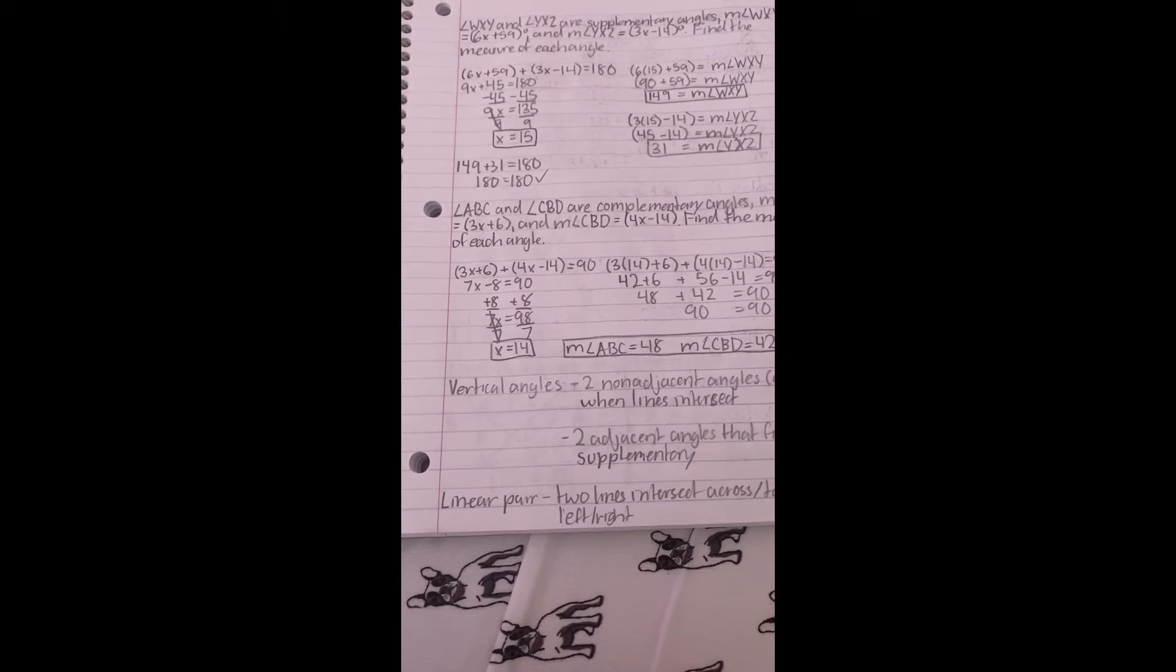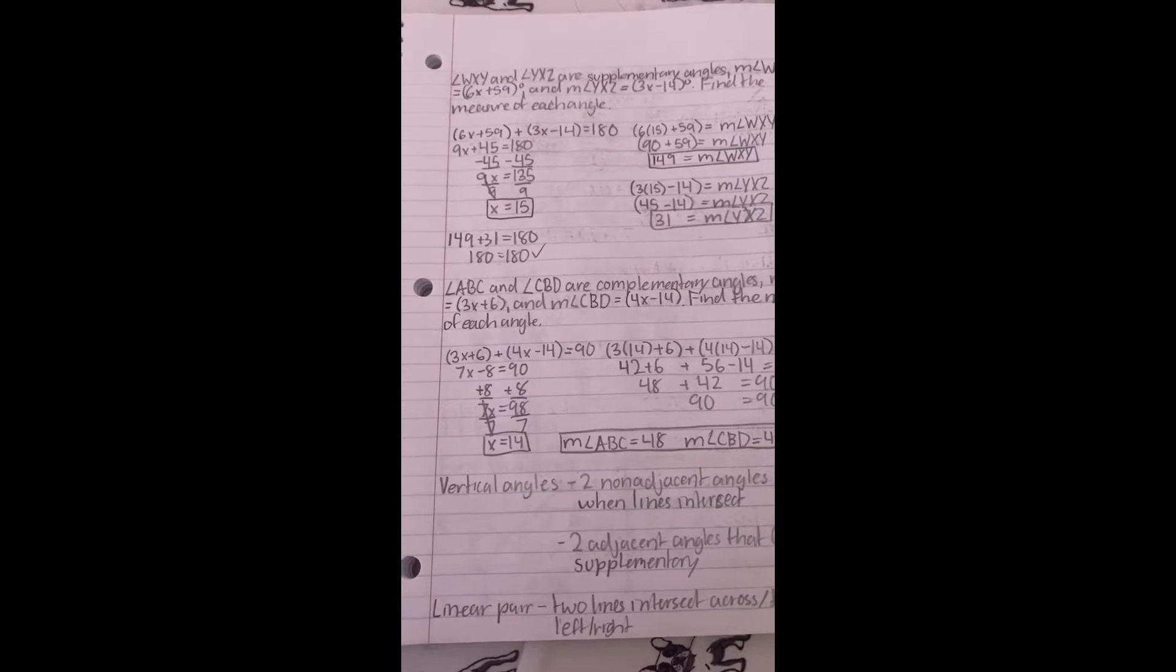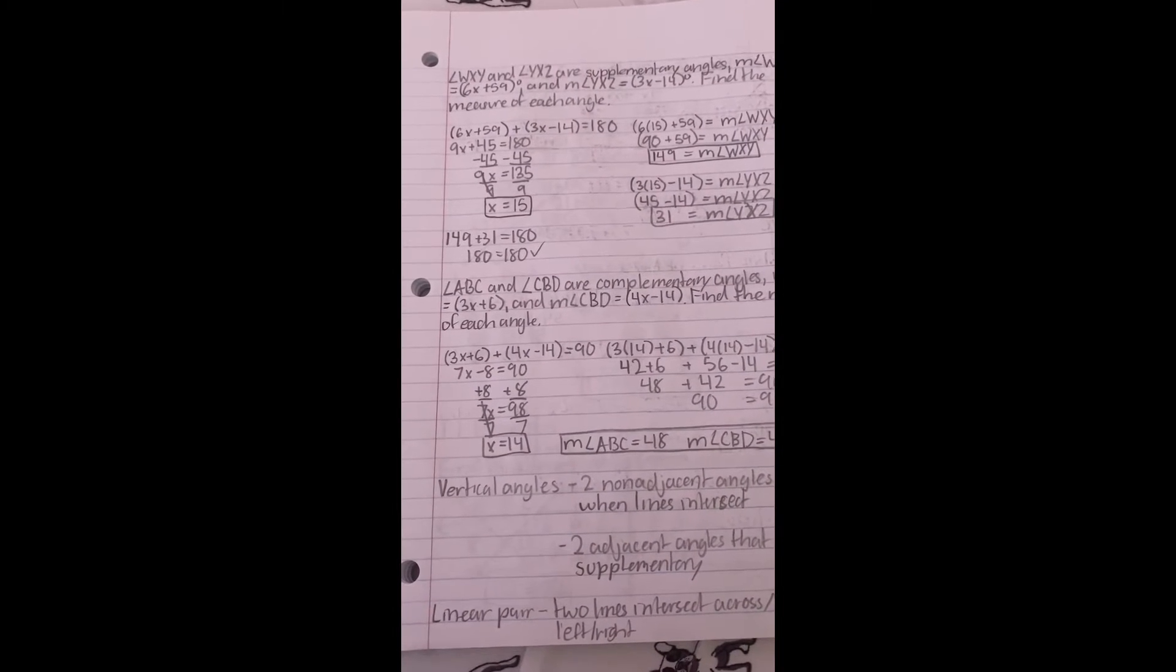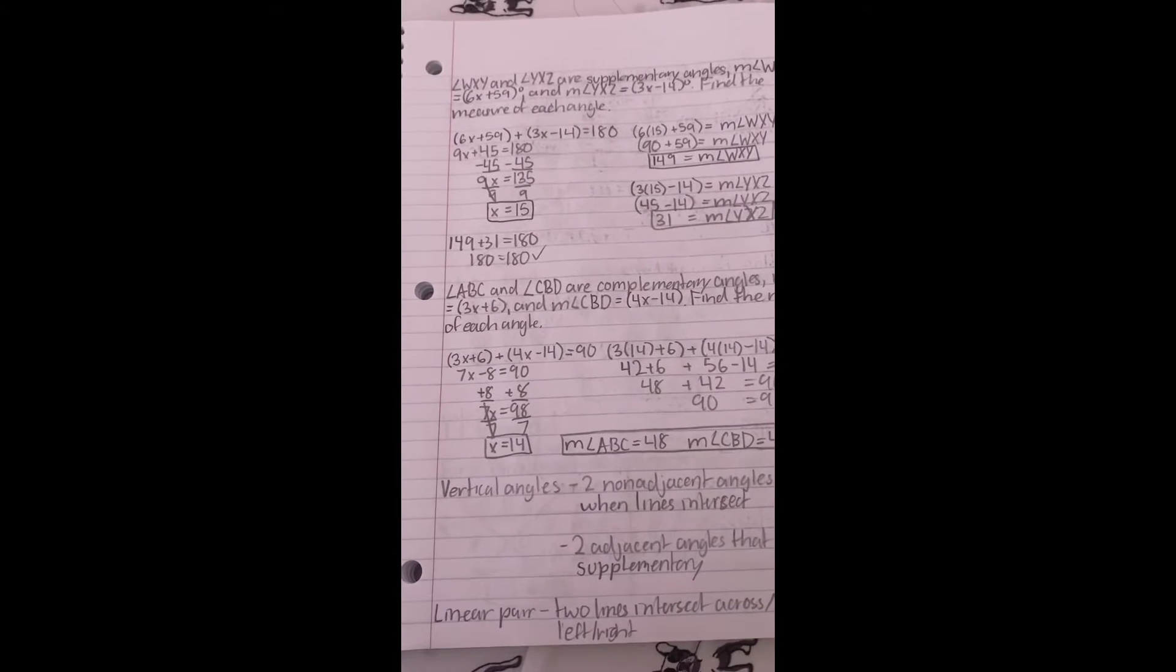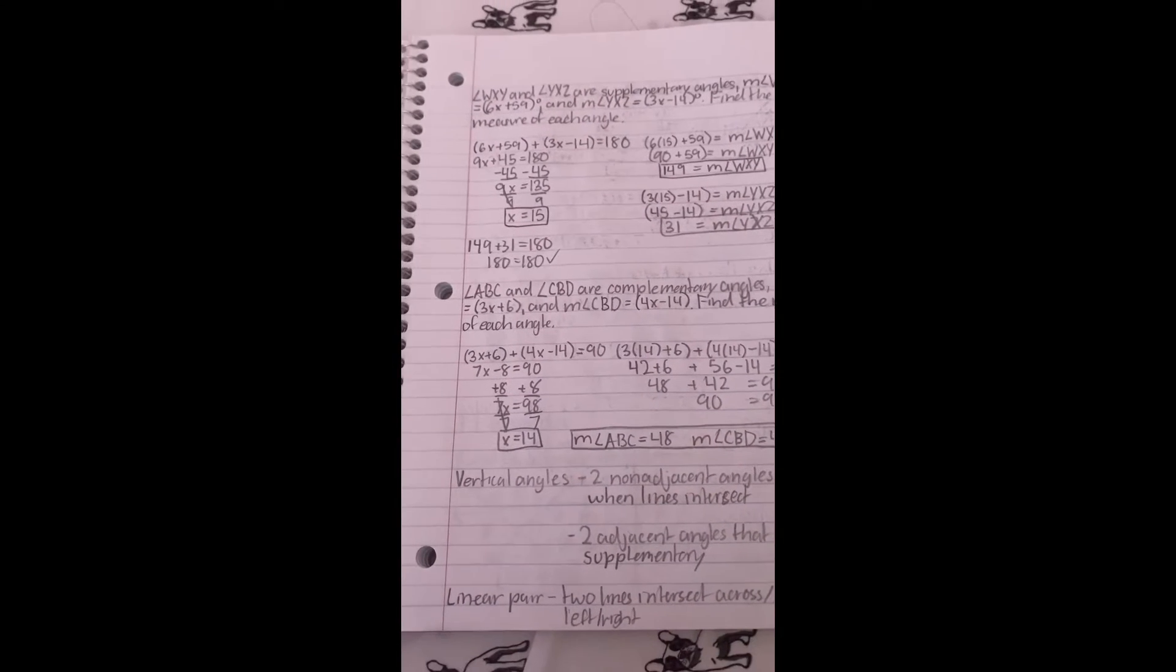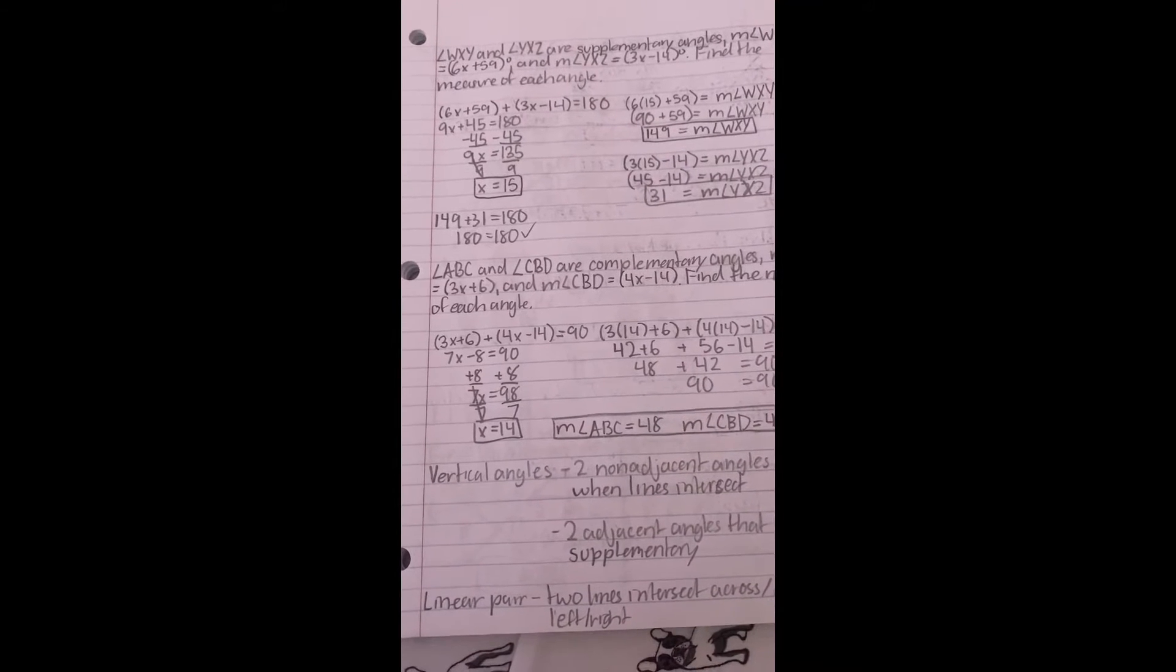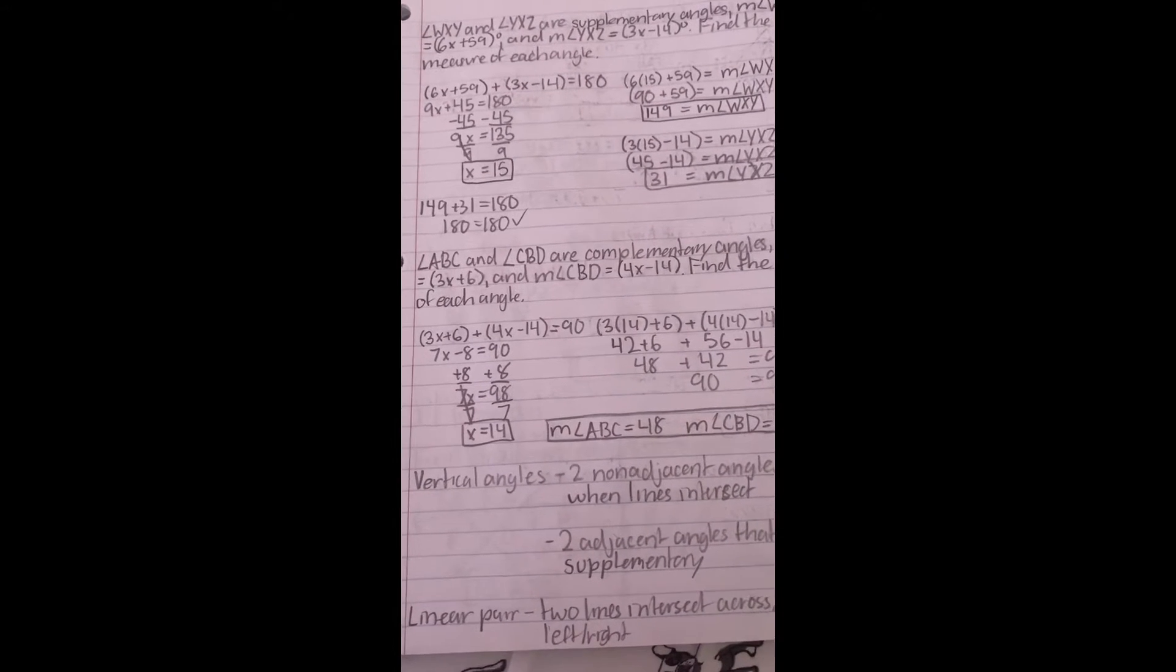3x plus 6 plus 4x minus 14 is 90 degrees. Add both x's and that makes 7x minus 8. Adding 8 to both sides results in 98 which is divided by 7, so x equals 14.